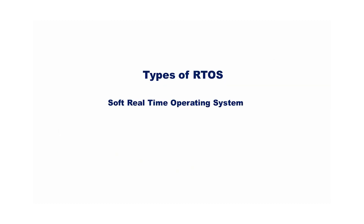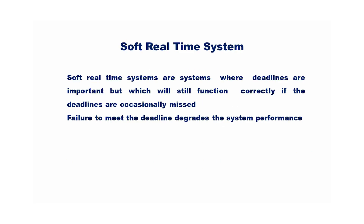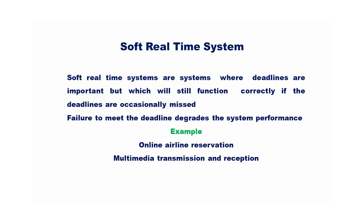There are two types of real-time systems: soft real-time systems and hard real-time systems. Soft real-time systems are systems where deadlines are important, but which will still function correctly if the deadlines are occasionally missed. Failure to meet the deadline degrades the system performance. An example of a soft real-time application is an airline reservation system, where an occasional delay is tolerable. Multimedia transmission and reception is another example.